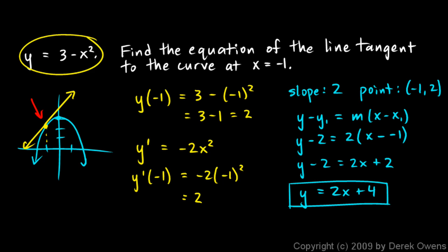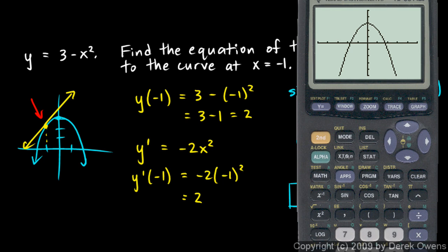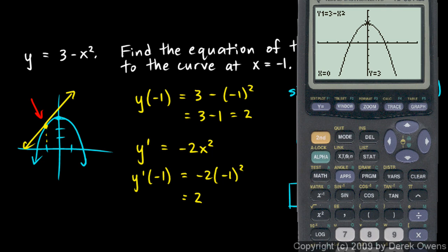Let's go back and check the first example — y equals 3 minus x squared with tangent line y equals 2x plus 4 — on the calculator. Typing in 3 minus x squared and graphing it shows our downward parabola. Using second draw, option 5 (tangent), and entering x equals negative 1, the calculator draws the tangent line and shows the equation at the bottom: y equals 2x plus 4. This confirms our answer.